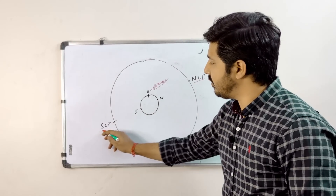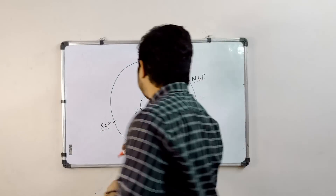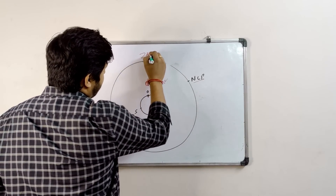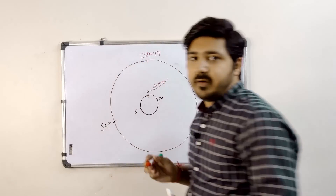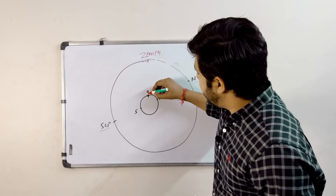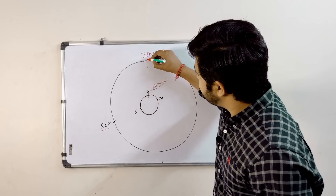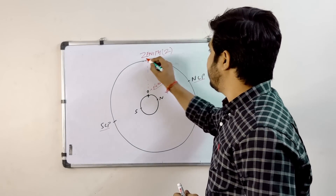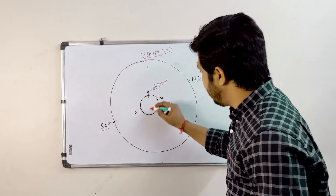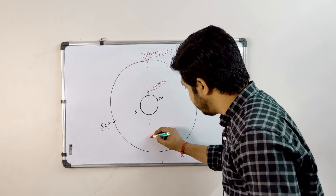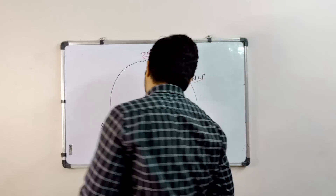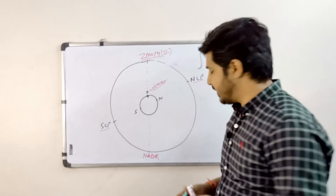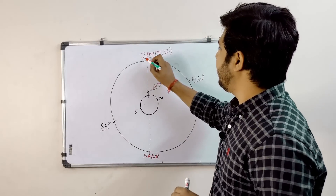This is the north celestial pole and this is the south celestial pole. Right above the observer we have the zenith — if we make an imaginary line from the observer to the celestial sphere, wherever it cuts makes the point zenith, represented as Z. Right below this point, going southwards below the zenith, this point is known as nadir.